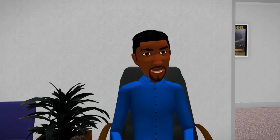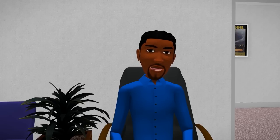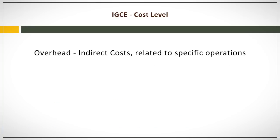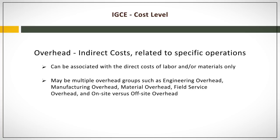What about overhead, other direct costs, general and administrative, and profit as it relates to cost — I want to be sure I understand those areas as well. Of course. Overhead costs are indirect costs related to support of specific operations. There can be overhead as an indirect cost to one, two, or multiple different cost categories. For some industries or companies, overhead can be associated with the direct costs of labor and/or materials only. In other industries or large companies, there may be multiple overhead groups such as engineering overhead, manufacturing overhead, material overhead, field service overhead, and on-site versus off-site overhead. Overhead is typically expressed as a percentage of the direct cost category it is associated with.